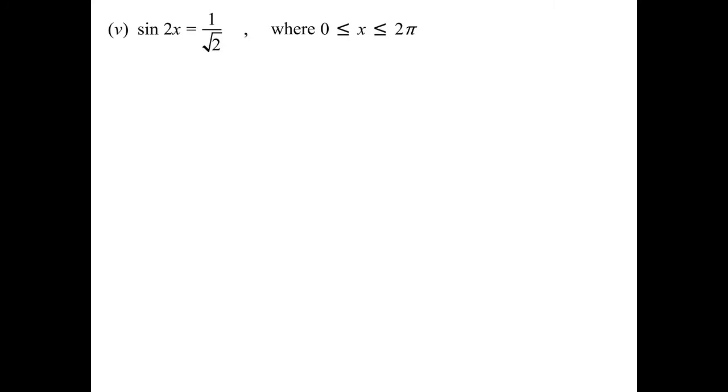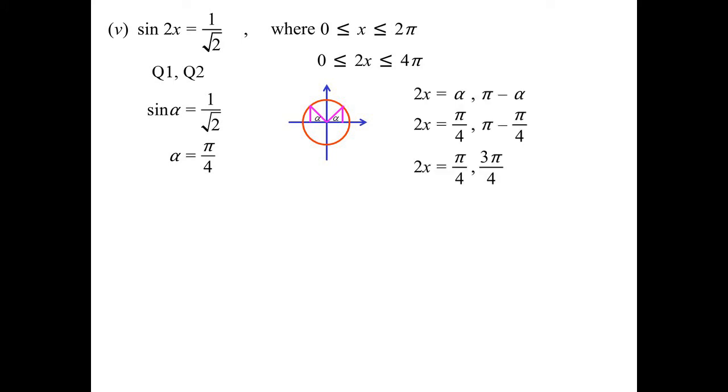sin 2x = 1/√2, well if x is between 0 and 2π, 2x is between 0 and 4π, so we're going around the circle twice. We're in quadrants 1 and 2 for this one. The acute angle is an exact value: π/4.